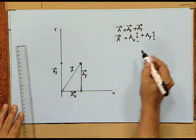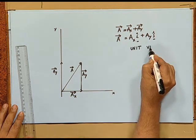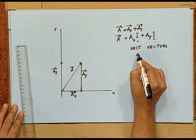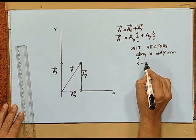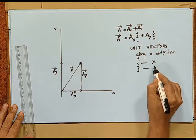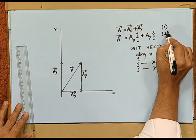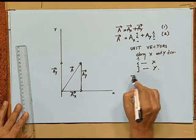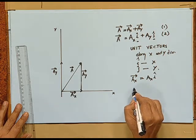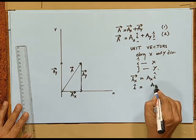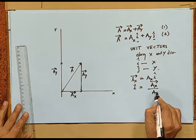What are i-cap and j-cap? They are called unit vectors along the x and y directions. i is the unit vector along the x direction, j is the unit vector along the y direction. Going back to the definition: Ax vector is replaced by Ax i-cap. The unit vector i is vector Ax divided by Ax — meaning a vector divided by its magnitude gives the unit vector in that direction. It is called i because it is along the x direction.